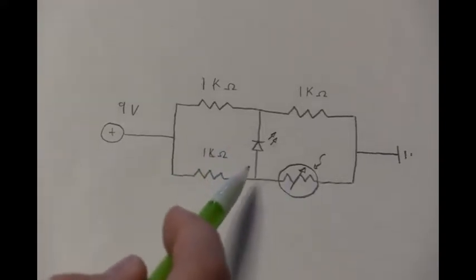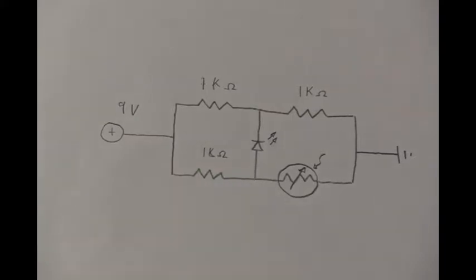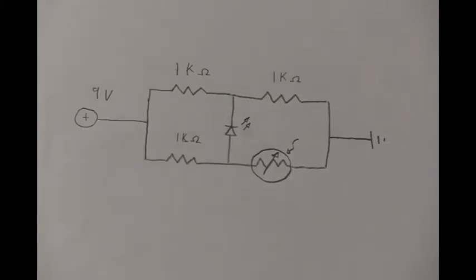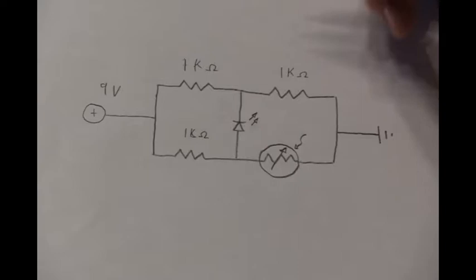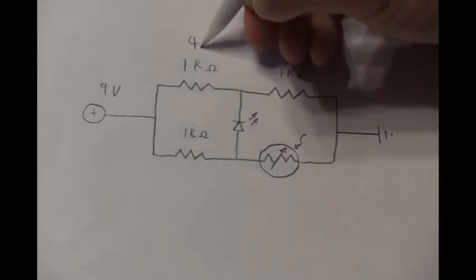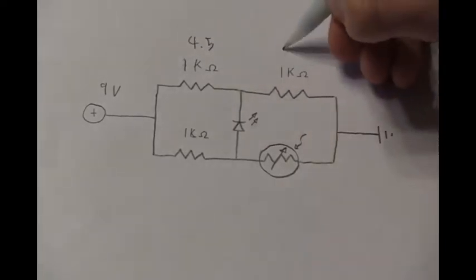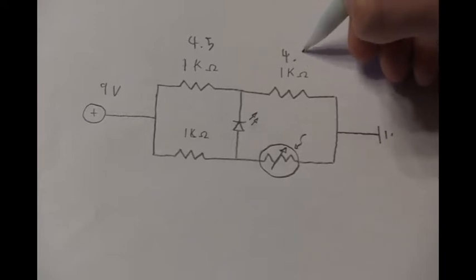We then have an LED bridging the gap and this creates a Wheatstone bridge. The voltage drop over each branch is going to add up to 9 volts. So over each 1 kiloohm resistor on the top it's going to be 4.5 volts and 4.5 volts.